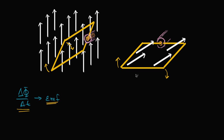Let's look at it from the point of view of the actual loop of wire. From this perspective, the magnetic field is at some angle. As we rotate the entire loop — it's attached to some type of an axle — in a clockwise direction, what is going to happen to this angle?